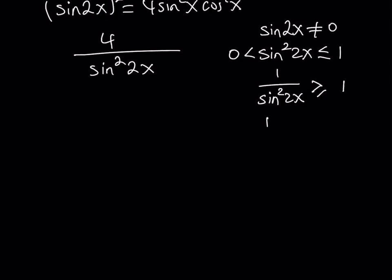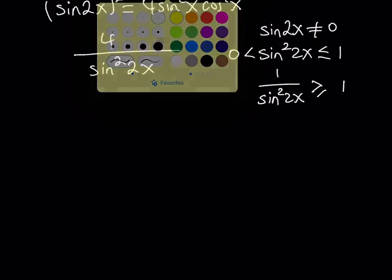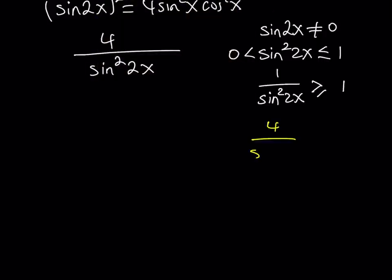So now we can multiply both sides by 4. If you multiply both sides by 4, then you're going to get 4 over sine squared 2x is greater than or equal to 4. And this basically proves the inequality that we were trying to prove.